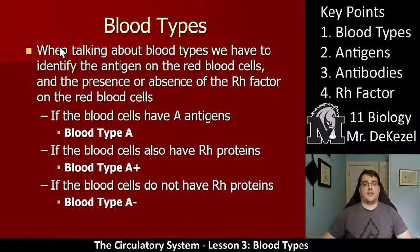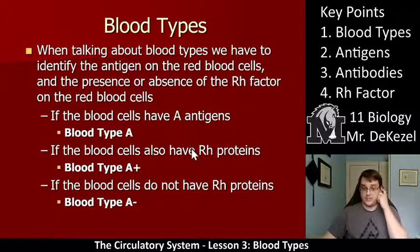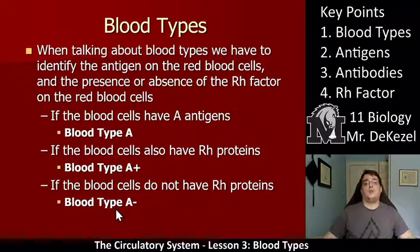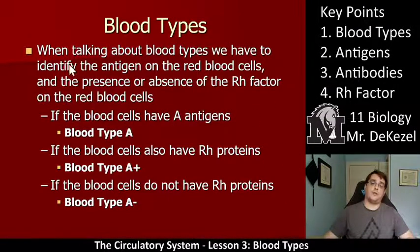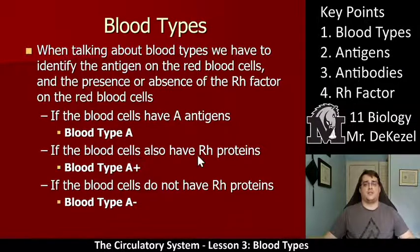So when we talk about these blood types, we identify the antigen on the red blood cells and the presence or absence of the RH factor. If the blood cells have A antigens, we have blood type A. If the blood cells also have RH proteins, we would have blood type A positive. If the blood cells do not have RH proteins, we would have blood type A negative. So this is just a very simple example.